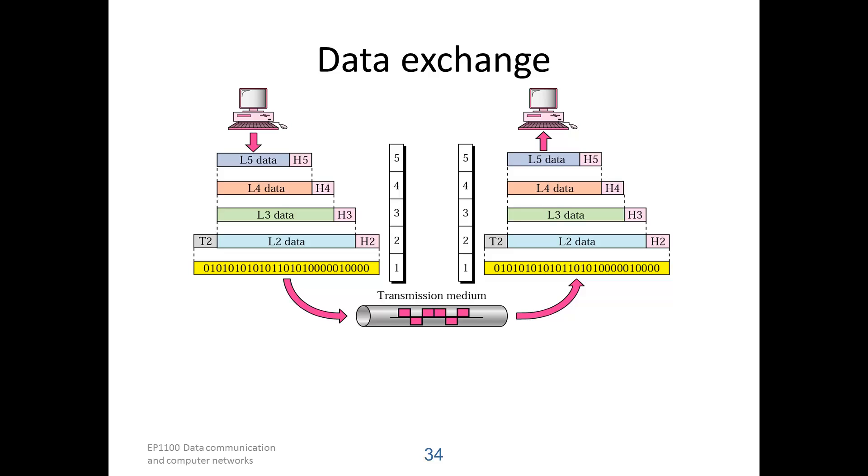It will look at control information H3, strip it off, and deliver the unit to layer 4. It also uses and strips off its control information and delivers the unit to layer 5, which eventually is able to deliver application data unit to the receiving application.